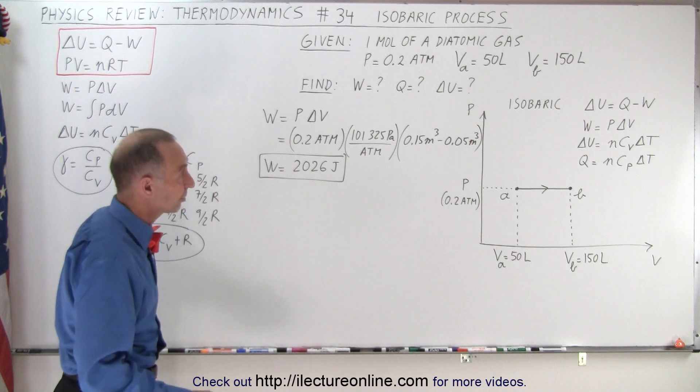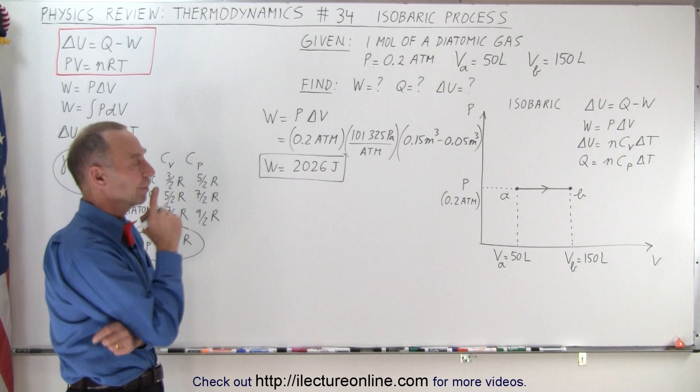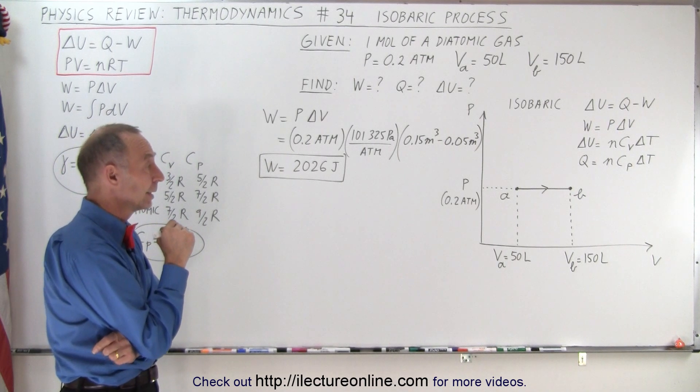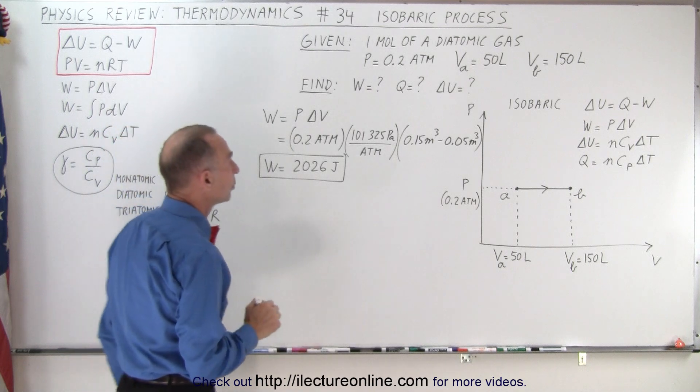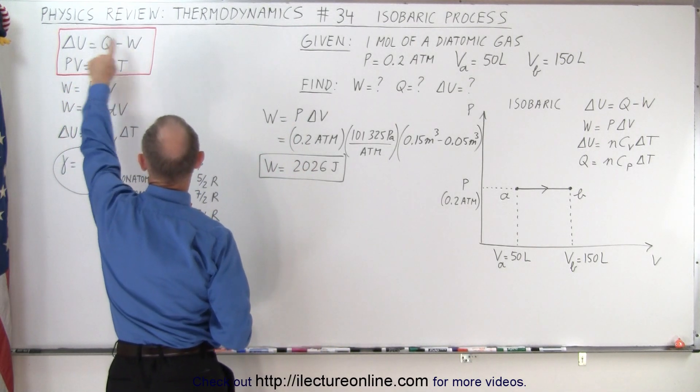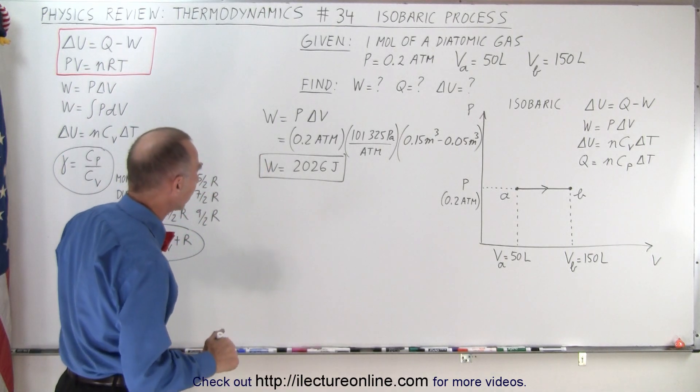That was easy enough. In an isobaric process, pressure remains constant, you know the change in volume, there's work done. However, how do we come up with the change in the temperature? For that we need to go to our ideal gas equation, PV equals nRT. Notice they have a red box around it. These are the two key equations for any of these processes.